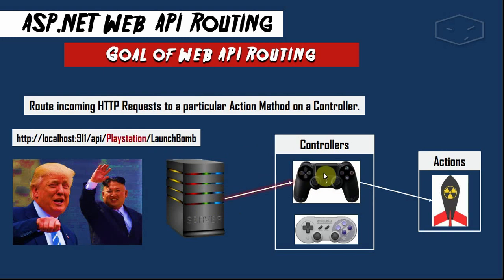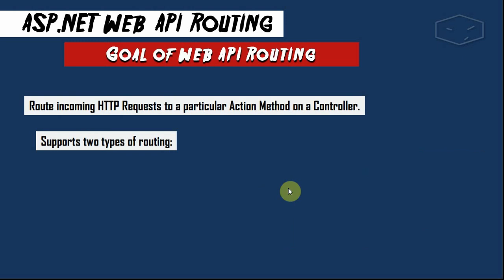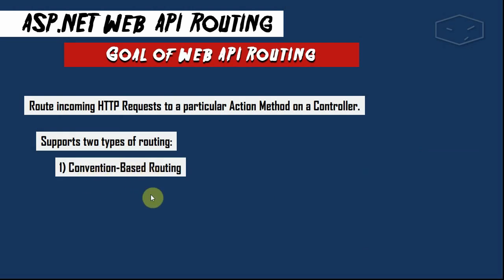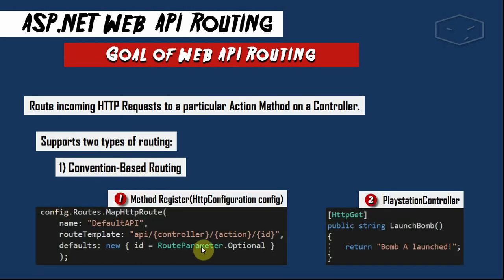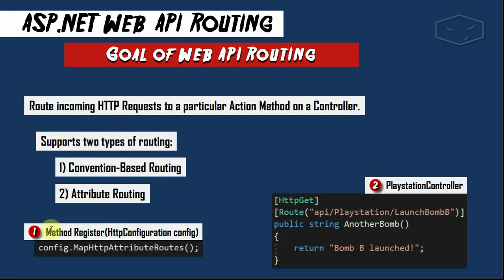This URL will match with the PlayStation controller and the LaunchBomb action — and my Web API works. It supports two types of routing. The first one is convention-based routing, where we have to register a template like this one, and then we can fire an action with this template. The second one is attribute routing, where we register the line config.MapHttpAttributeRoutes.